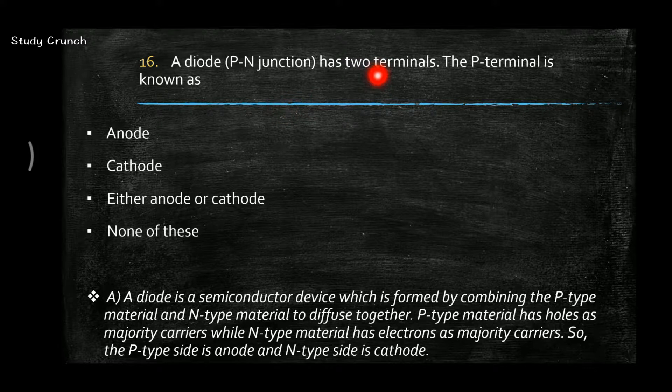Next, a diode has two terminals. The P-terminal is known as anode. A diode is a semiconductor device which is formed by combining P-type and N-type material to diffuse together. P-type has holes and N-type has electrons. So P-side is the anode and N-side is the cathode.